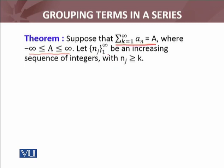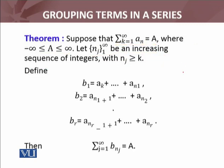Let n_j be an increasing sequence of integers, where n_1 will be an integer, n_2 will be an integer, and n_1 छोटा होगा n_2 से, so on and so forth — n_3 जो है वो n_2 से भी बड़ा होगा. This increasing sequence of integers satisfies n_j greater than or equal to k, where k कोई fixed integer है, for each j. Now we define the grouping: the first group b_1 consists of terms a_k up to a_{n_1} of the original series.